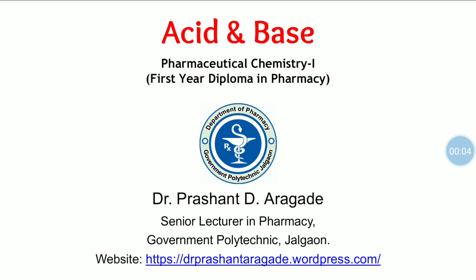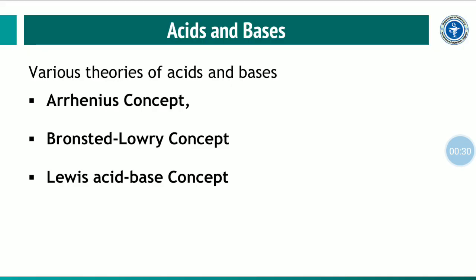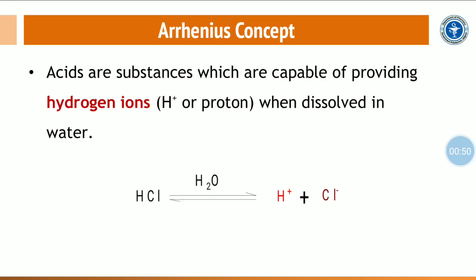Hello and welcome to the topic: Acids and Bases. After this video, you will be able to define acids and bases according to different theories, discuss limitations of the Arrhenius concept, and compare acids and bases on the basis of different theories. There are three theories which explain the nature of a compound: the Arrhenius concept, the Bronsted-Lowry concept, and the Lewis acid-base concept.